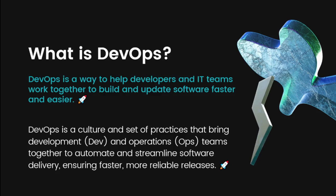DevOps helps us to merge all these different functionalities into one main source code. Here is the standard definition of DevOps: DevOps is a culture and a set of practices that bring the development and operation teams together to automate and streamline software delivery, ensuring faster and more reliable releases.